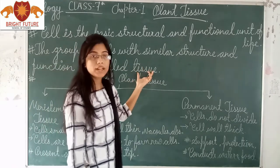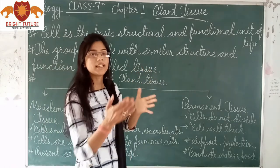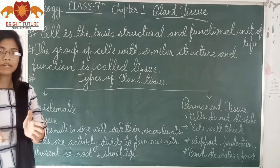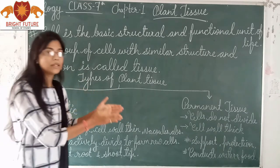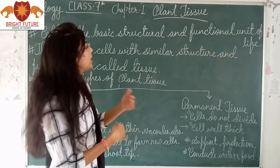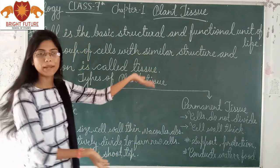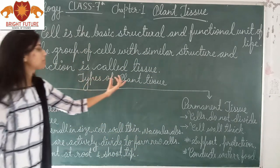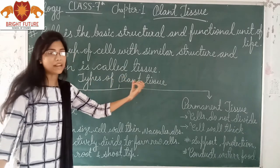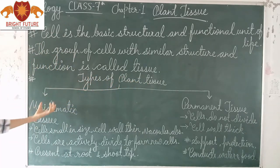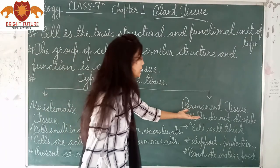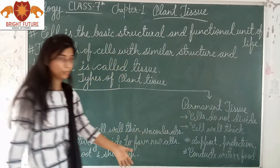Now if we talk about tissue, there are many kinds of tissue in plants and animals separately. In this chapter we will discuss about plant tissue. There are mainly two types of plant tissue: the first one is meristematic tissue, and another one is permanent tissue.